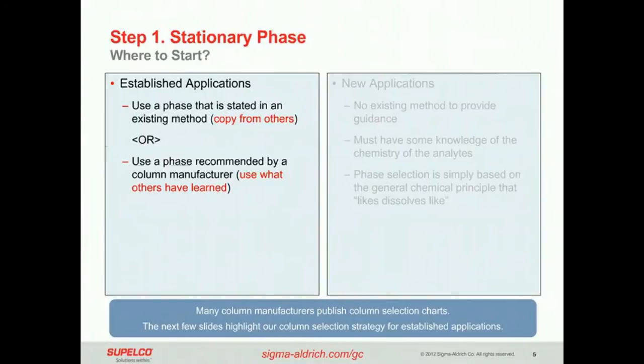So we need to choose the stationary phase, and where do we begin? There are really two strategies for stationary phase. One is established applications where somebody has done something before that you may be able to copy. The other is new applications where you're developing an application for analytes that have never been tried by GC before. We'll discuss both paths.